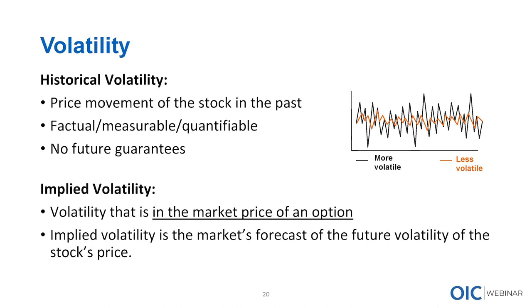Historical volatility is based off of price movements that have happened in the past in any given stock or index. It's factual, measurable, and quantifiable based on the movements made in that asset. When a stock has moved up and down quite a bit over a time period, you will see a higher historical volatility. If the stock has steadily moved up over a time period, the historical volatility will be a lot lower. It's based off of past movements and there's no future guarantees on it.